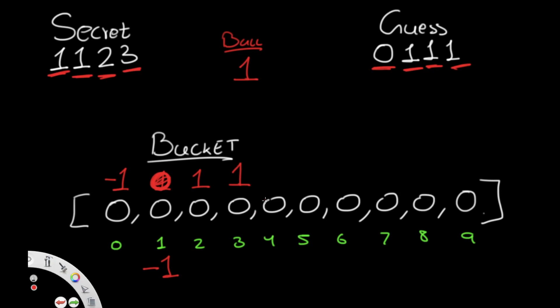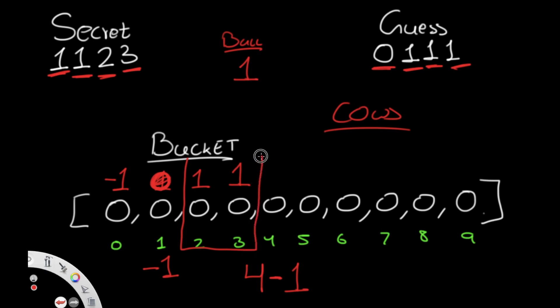Now calculating cows: len(secret) = 4, bulls = 1, so maximum possible cows = 3. We sum bucket values greater than zero: indices 0 (value 1) and 2 (value 1) — wait, only the values greater than zero matter, which are two values of 1 each, summing to 2. So cows = 4 - 1 - 2 = 1.